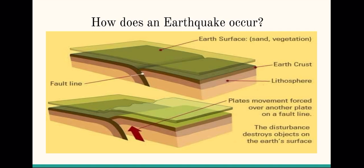An earthquake occurs when rigid plates glide over the ductile convecting mantle. Earthquakes are usually caused when rock underground suddenly breaks along a fault. This sudden release of energy causes the seismic waves that make the ground shake. When two blocks of rock, or two plates, are rubbing against each other in either direction, this makes a little stick, which creates disturbance.